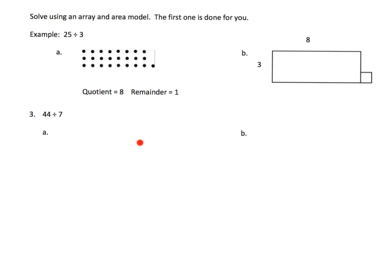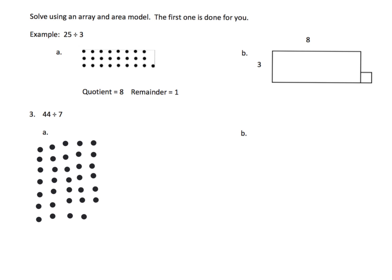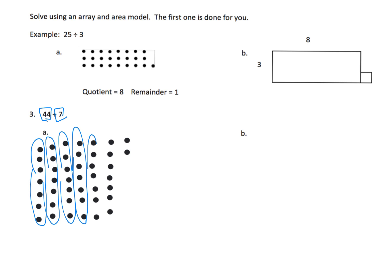Now they're giving us less scaffolding. We're going to do 44 divided by 7 using the array method and the area method. Because we're dividing by 7, we're going to have 7 in each column. Counting up to 44 gives us 6 columns with a remainder of 2. Our quotient is 6 and our remainder is 2.